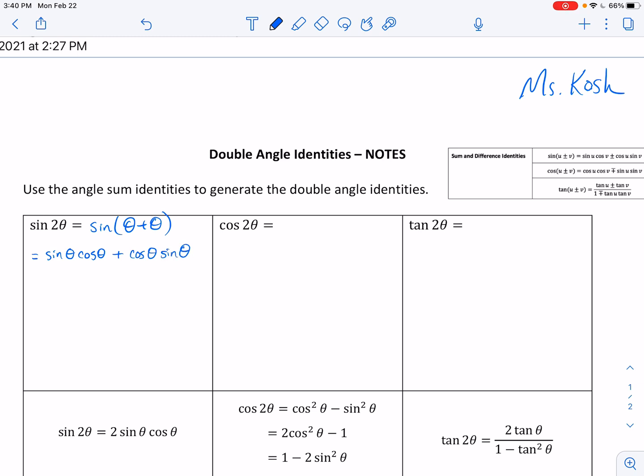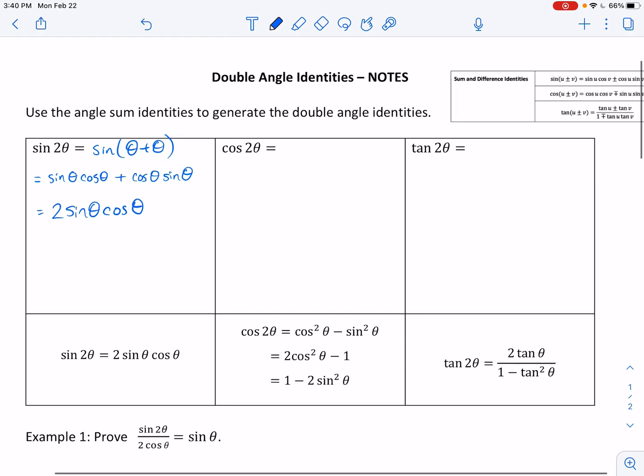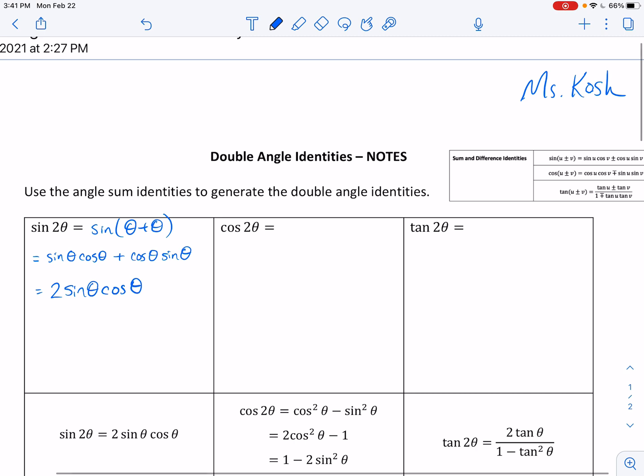Well, they all have the same variable because it was just theta plus theta. So notice these two terms, they're written in a different order, but they're the same thing. So this is just equal to 2 sine theta cosine theta. So I went ahead and put all the nice, beautiful identities down at the bottom so they'd already be typed up, but there we go.